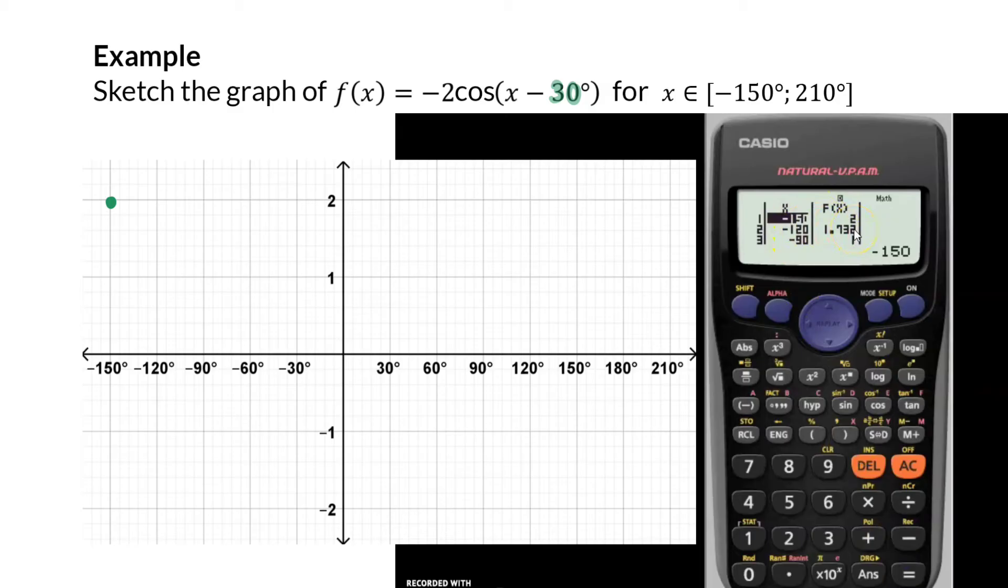Just a reminder that you don't have to plot all the coordinates. We do have to show the starting point, which is (-150, 2). And then as we move down, the next important point, if we look at our y values, will be the x-intercept at -60.